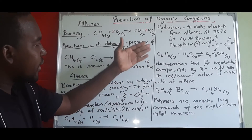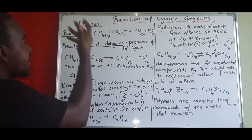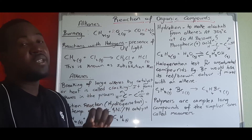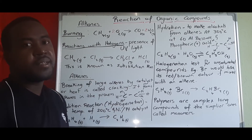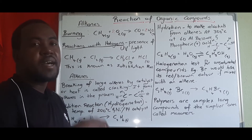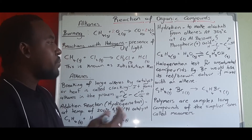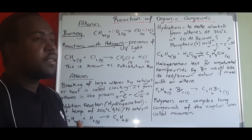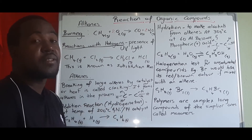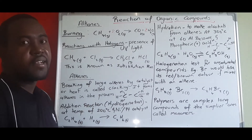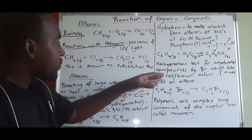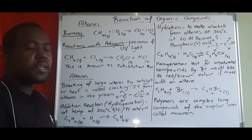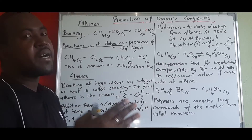Now halogenation — the reaction with halogens — is actually used to distinguish whether a compound is unsaturated. Unsaturated means it has a double or triple bond, meaning it doesn't have the maximum number of hydrogen atoms it could have, so it has space for more things to be added. The halogenation test is specifically used to distinguish if something is saturated or unsaturated.